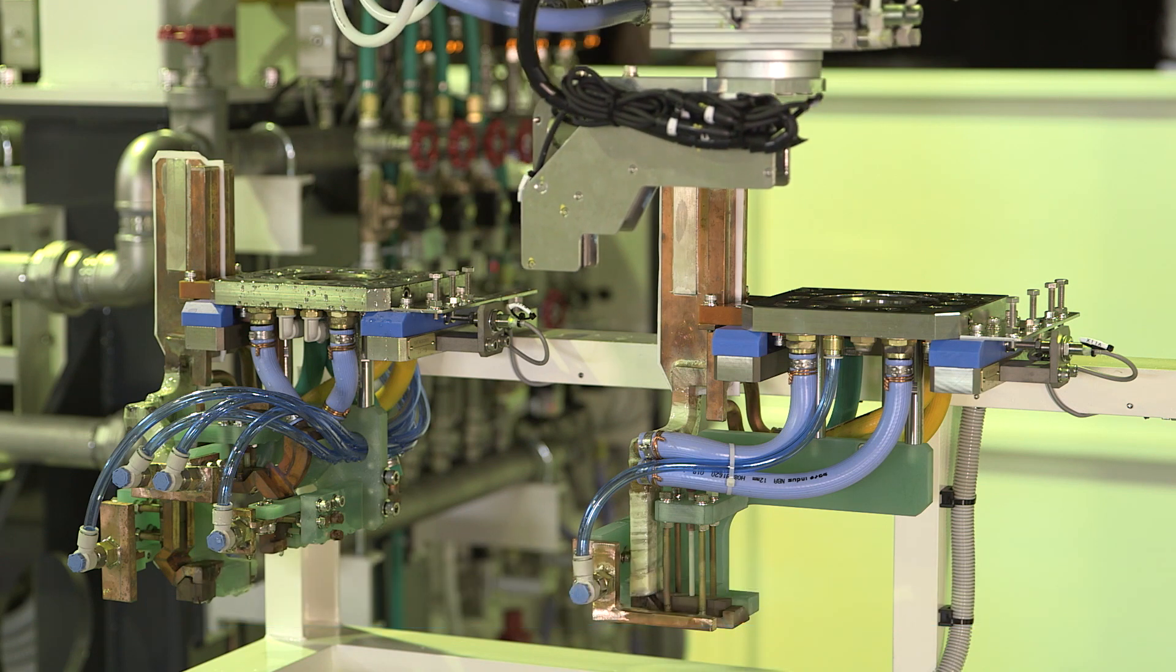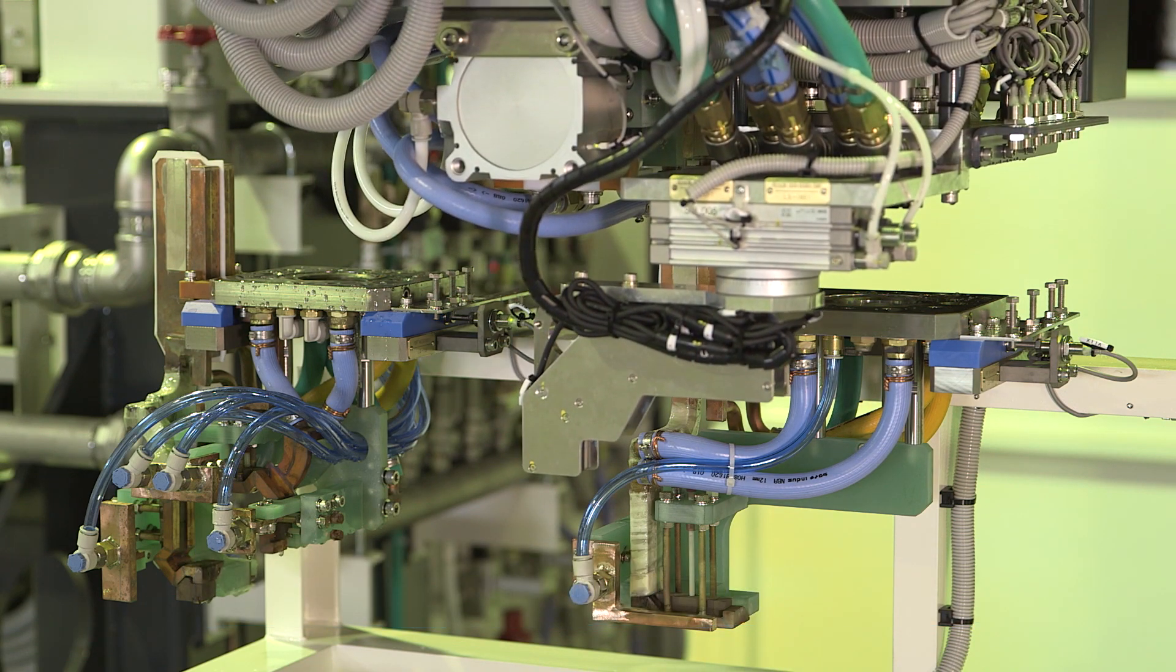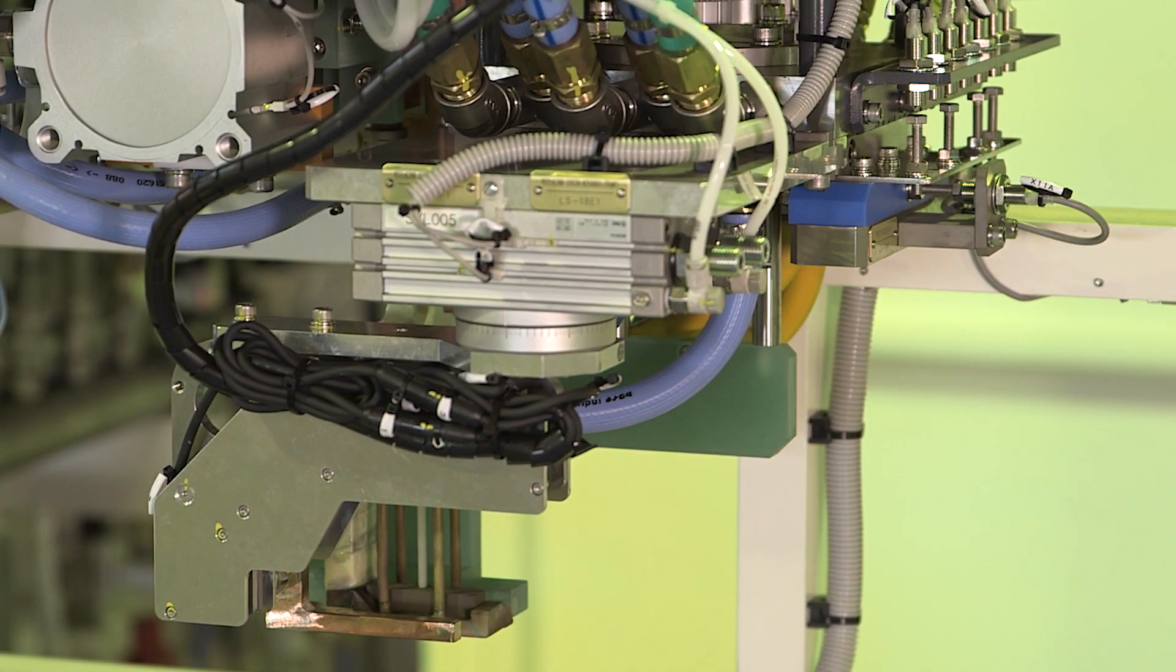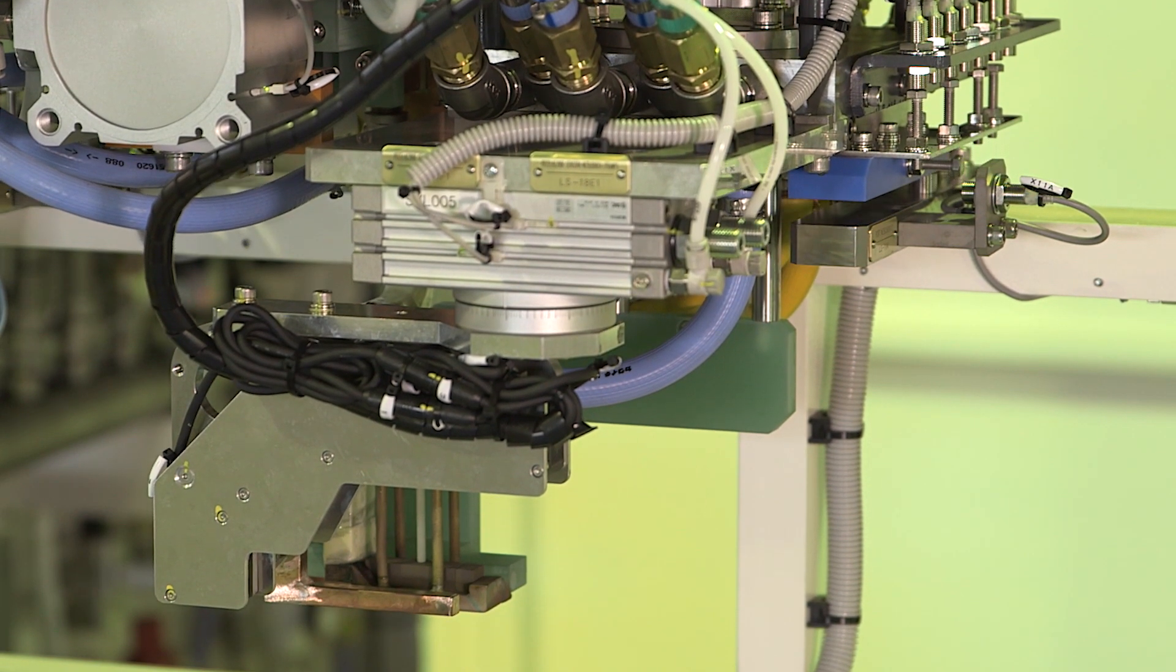The machine servo motor positions the coil and the cylinder detaches the current coil and attaches the new coil.